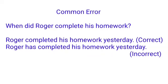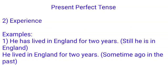Our next use of present perfect is when we talk about our experience. Here are some examples: 'He has lived in England for two years.' versus 'He lived in England for two years.' The meaning for these two sentences is totally different. In the first sentence, the subject 'he' is still in England. But in the second one, sometime ago in the past he was in England — now he is not. So that is the difference.